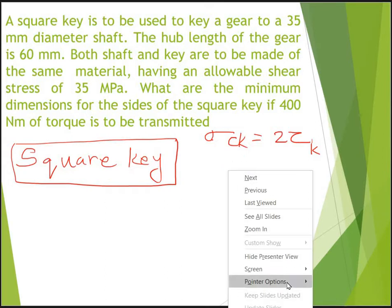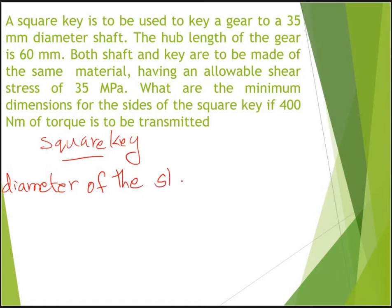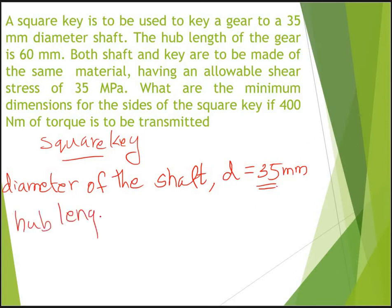This square key is used to connect a gear to a shaft. The given data: the diameter of the shaft is 35mm, and the hub length of the gear is 60mm.